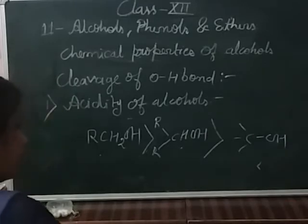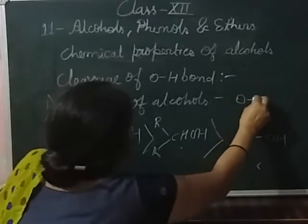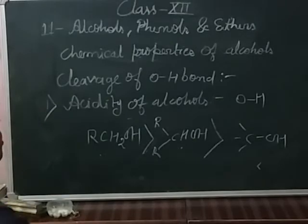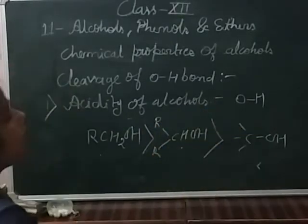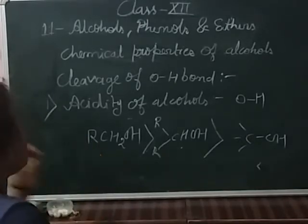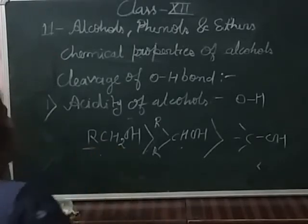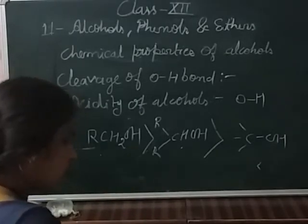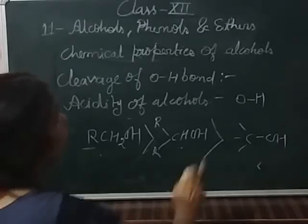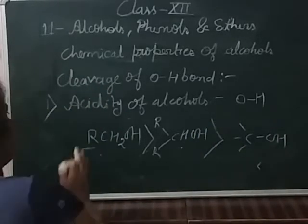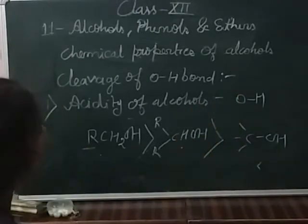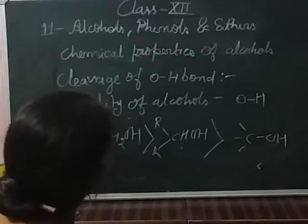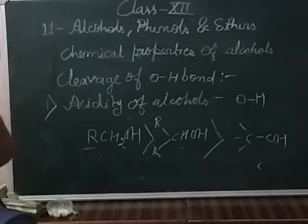Again, the acidity character of alcohol depends upon the polar nature of the O-H bond. If the electron-releasing alkyl group — such as an ethyl group — increases in the alcohol, then the electron density on oxygen increases, causing the polarity of the O-H bond to decrease. If the polarity of O-H decreases, the acidic strength also decreases.